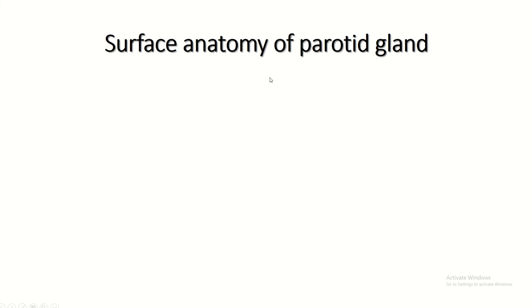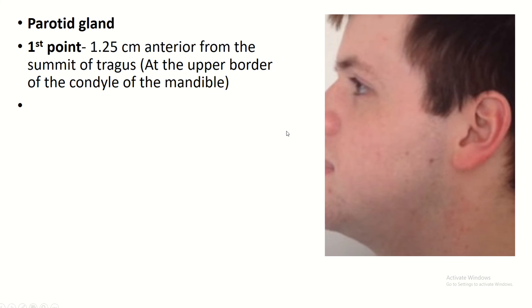Assalamualaikum and welcome all to today's video: the surface anatomy of the parotid gland. The first point is 1.25 centimeters anterior from the summit of the tragus, and the bony point is the upper border of the condyle of the mandible.